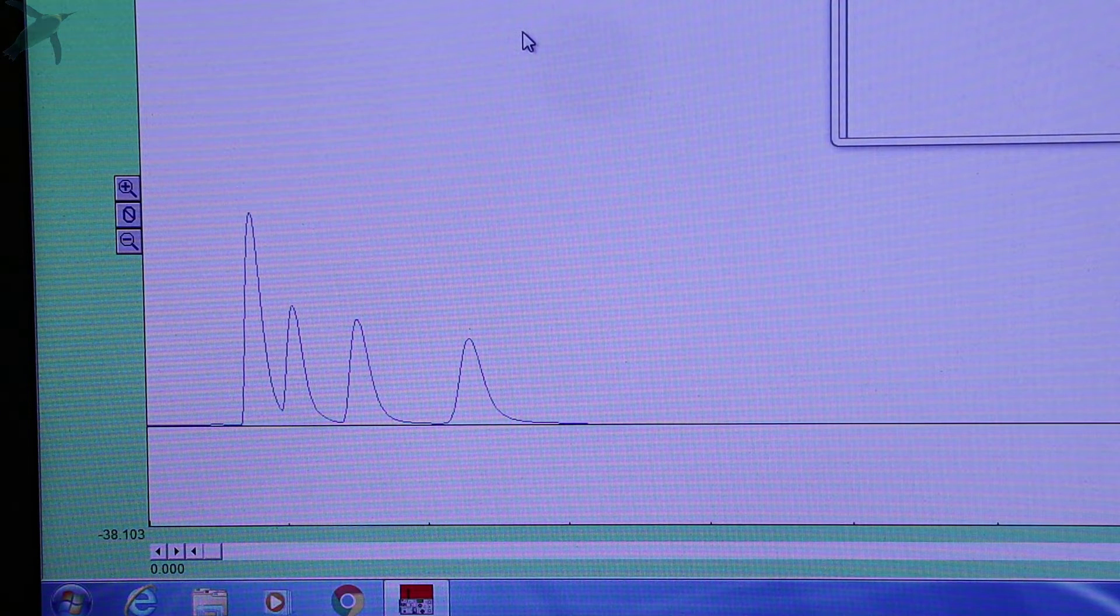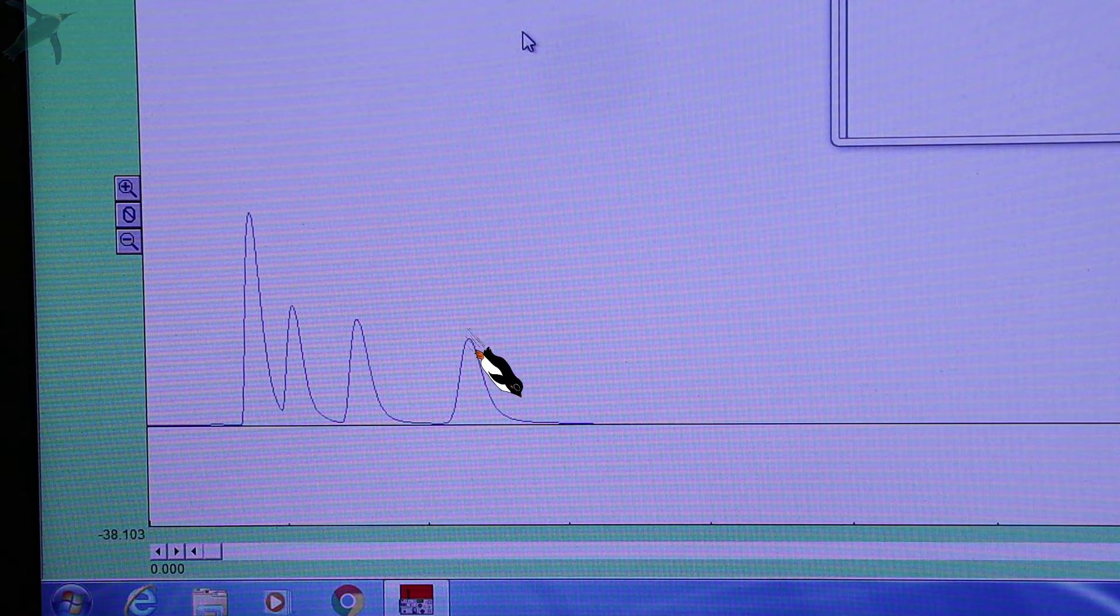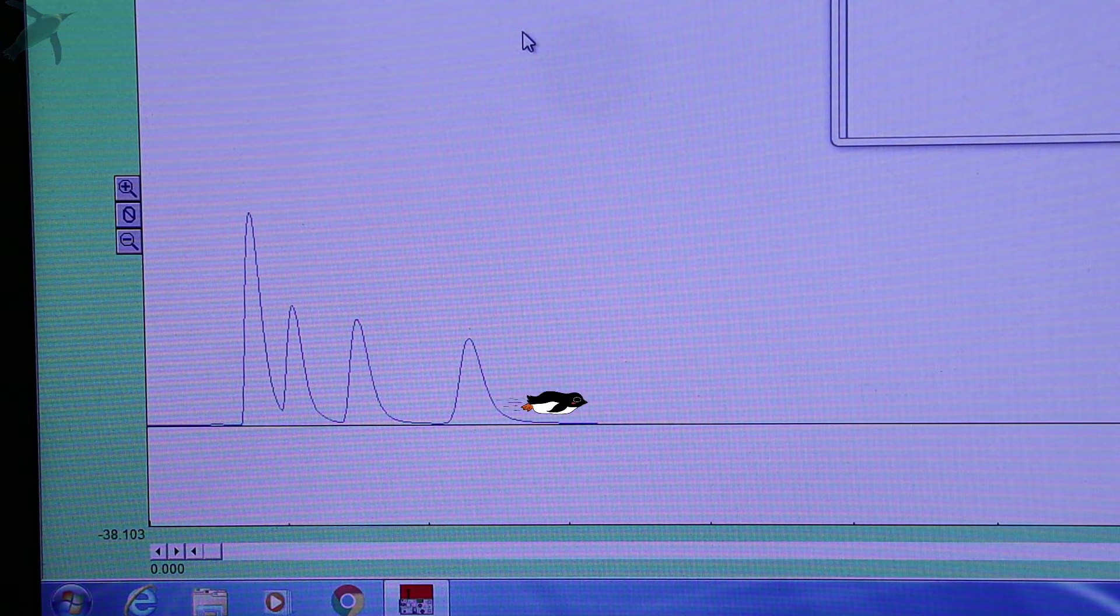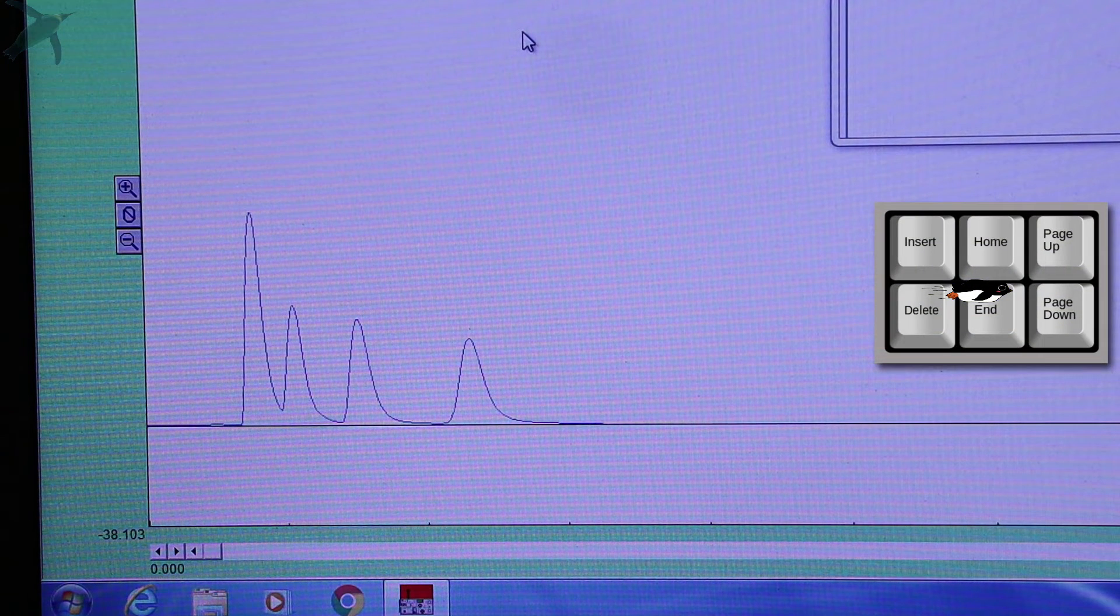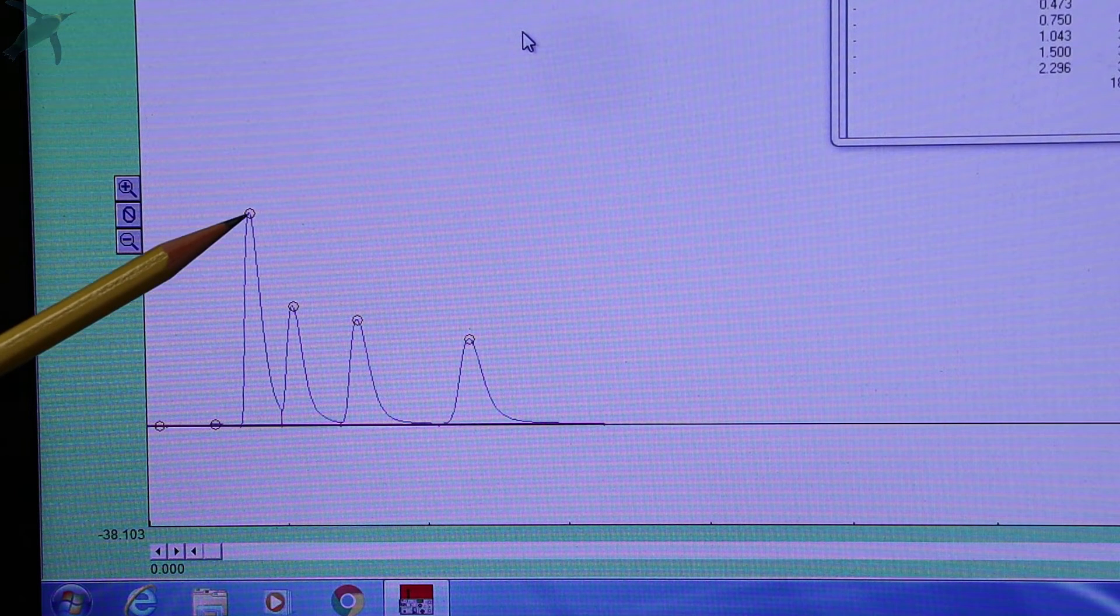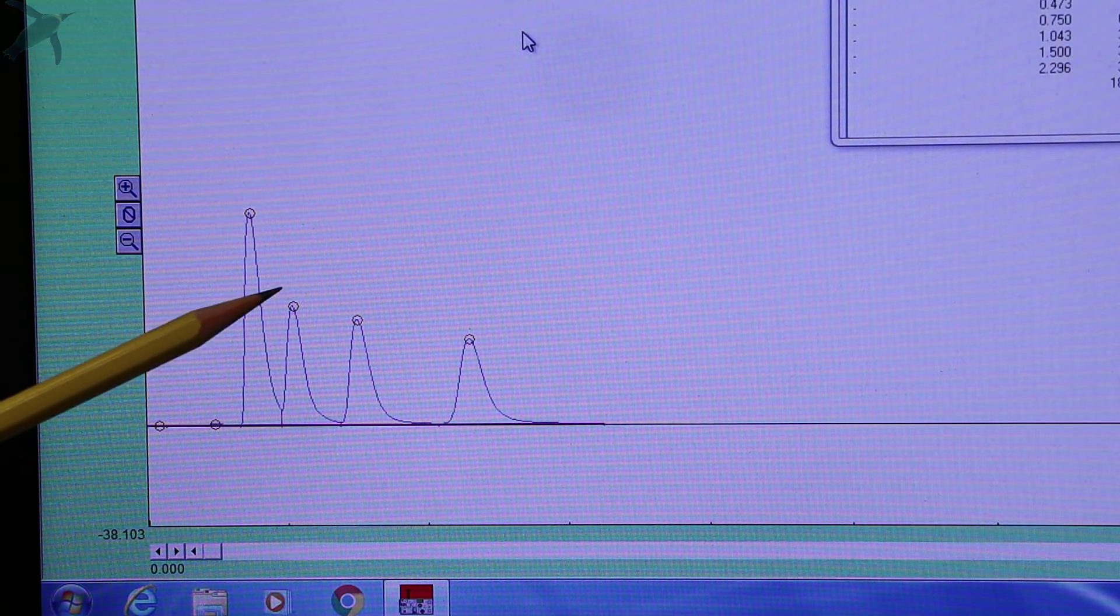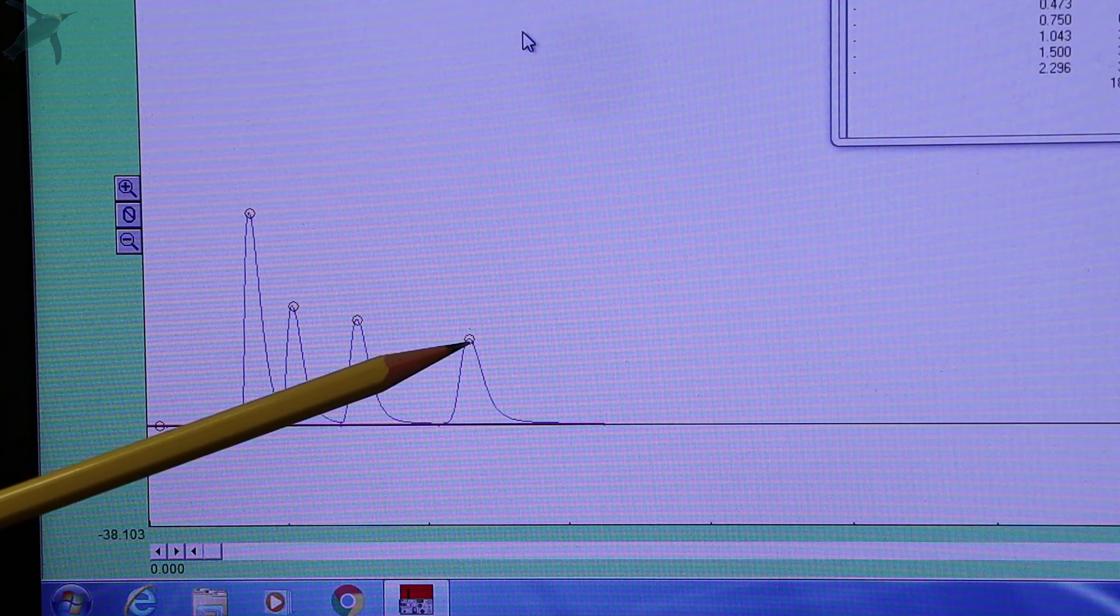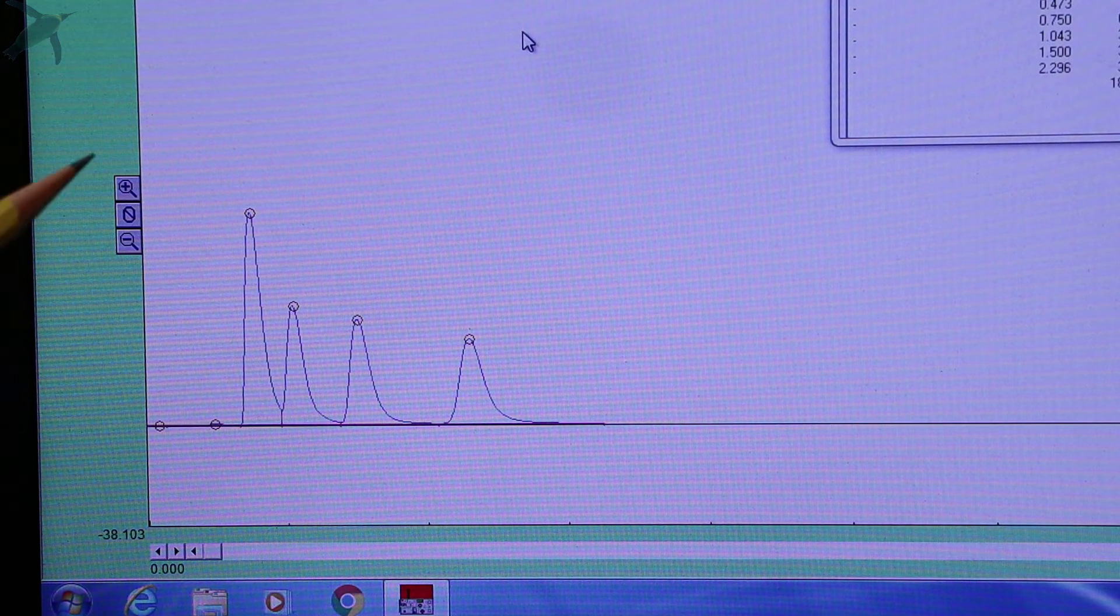So our analysis is now complete. We see four peaks, and to stop it we press End on the keyboard. You see that the peaks actually get a red circle meaning that they have been recorded and detected by the software.